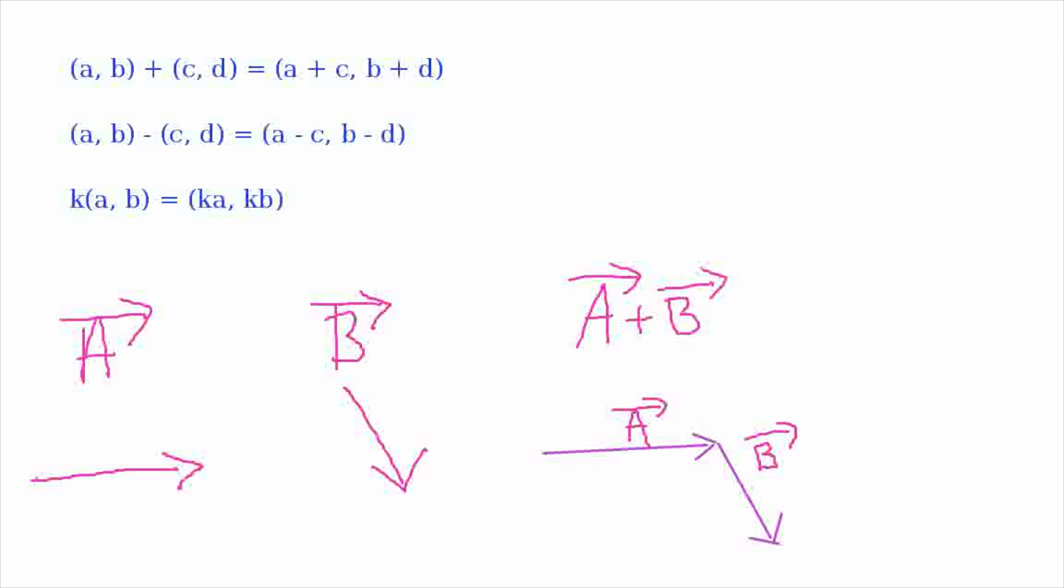When you have them lined up that way, then the vector that goes from the tail of the first one, the beginning of the first one, to the end of the second one. So this black vector then is a plus b. Let me show you that that gives the same answer as the algebraic version.